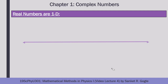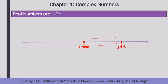The simplest possible one-dimensional figure is a straight line. We first define an origin, which is zero on the number line. To plot +4.6, we measure a length of 4.6 along the right-hand side from the origin. To plot −4.6, we measure a distance of 4.6 towards the left of the origin. This is how we express one-dimensional numbers on the number line.